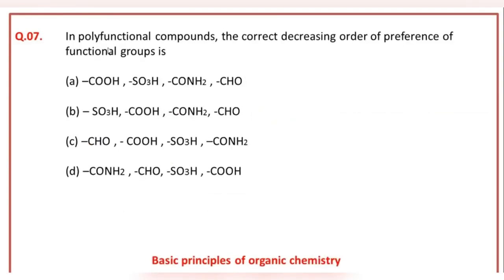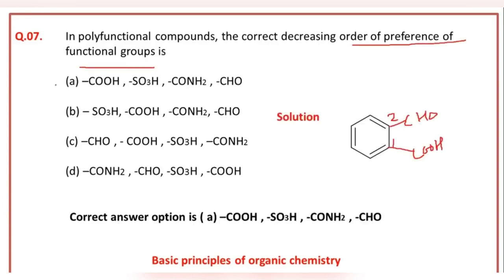In polyfunctional compounds, the correct decreasing order of preference of functional group is: A is the correct answer option.